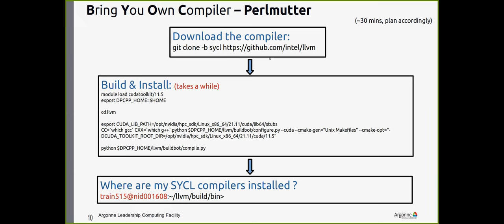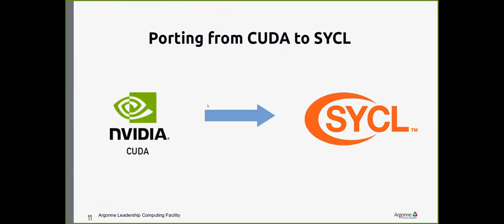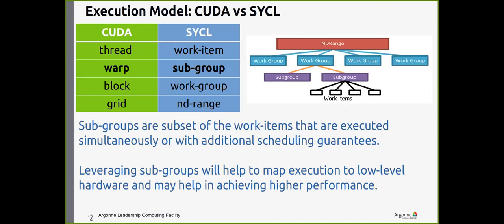You can build your own DPC++ compiler on Perlmutter with ease. There are CMake build instructions, and there is also already a module you can use. Just clone the repo, build with the CMake instructions, and you'll find the compiler — though it does take a while to build, so be careful of that. The practical question is: what does it take to port from CUDA to SYCL?